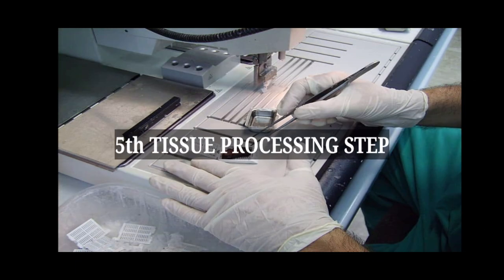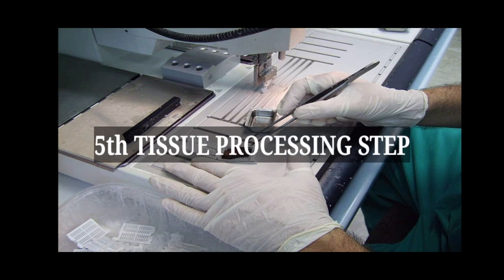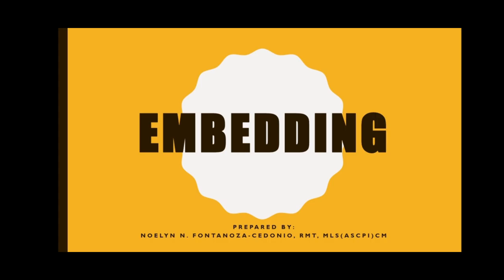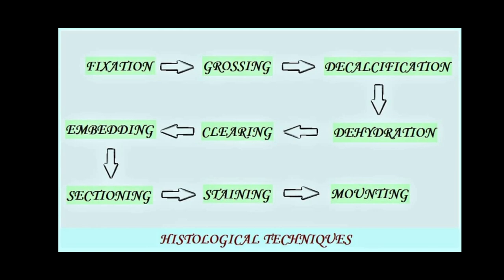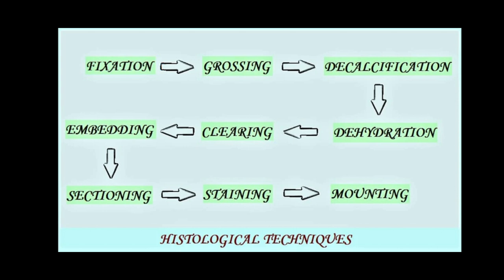We are now down to the fifth tissue processing step, that is embedding. But before that, let's have a brief recap of what we have been doing for the past lectures. Fixation has two main goals: to fix or preserve fresh tissue for examination, and to harden and protect the tissue from the trauma of further handling so that it is easier to cut during gross examination. Fixation also allows the tissue to be properly oriented in the cassette in preparation for paraffin embedding and microtomy.